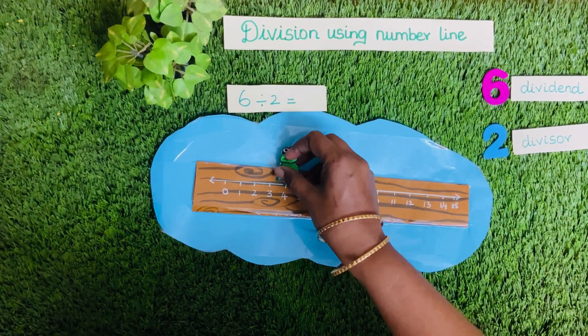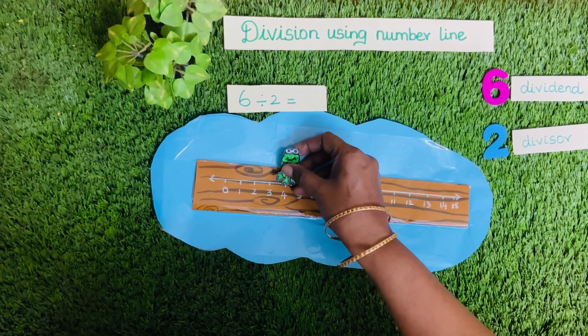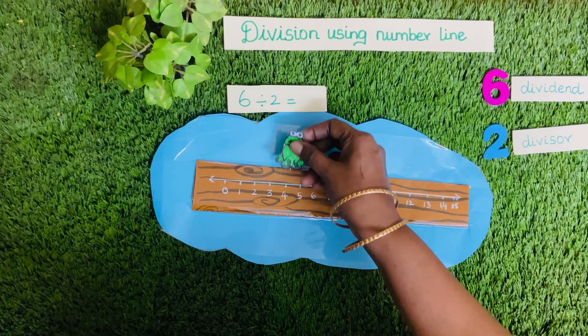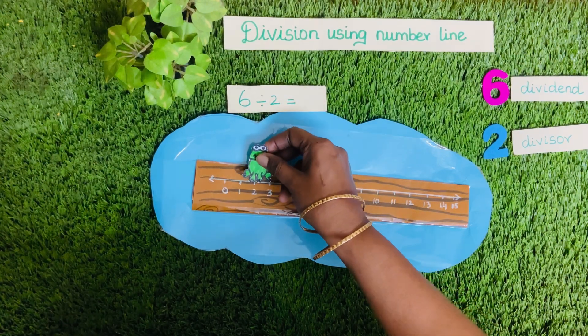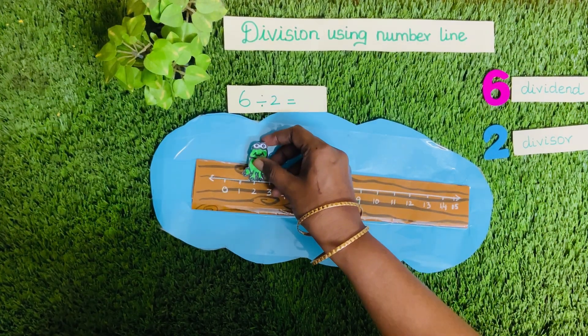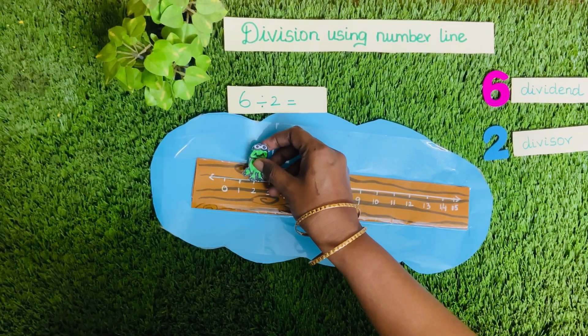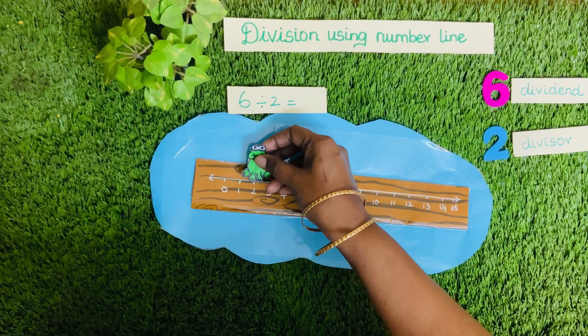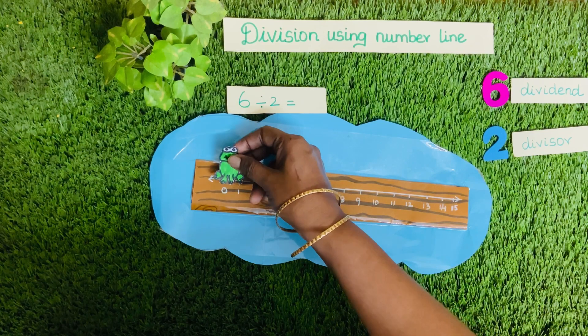Then the second jump brings the frog to the number 2. By the end, the frog reaches the number 0.